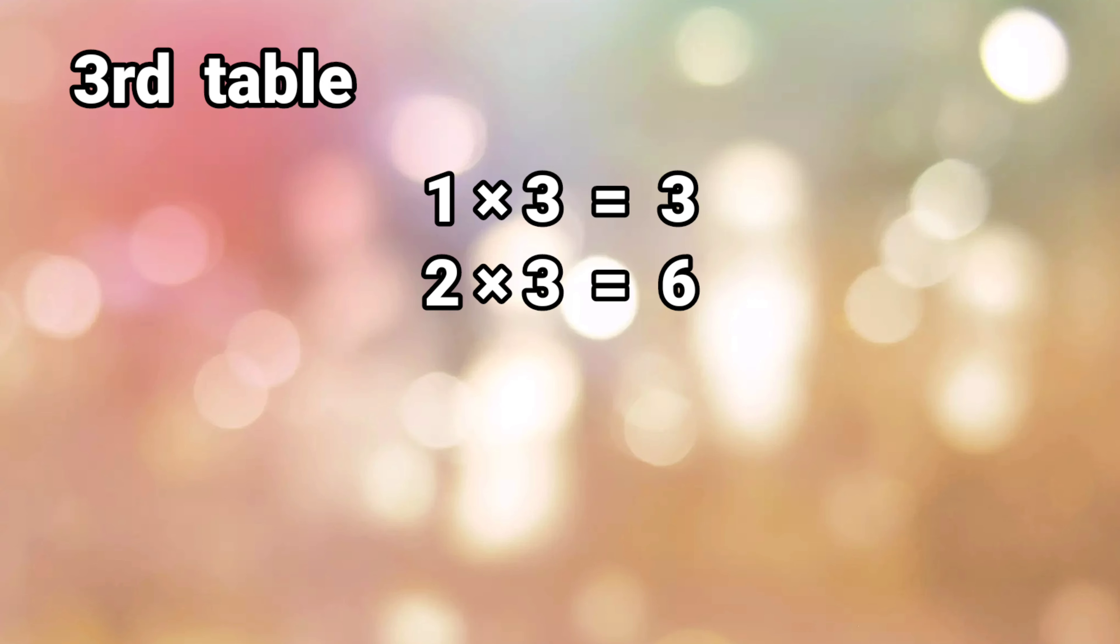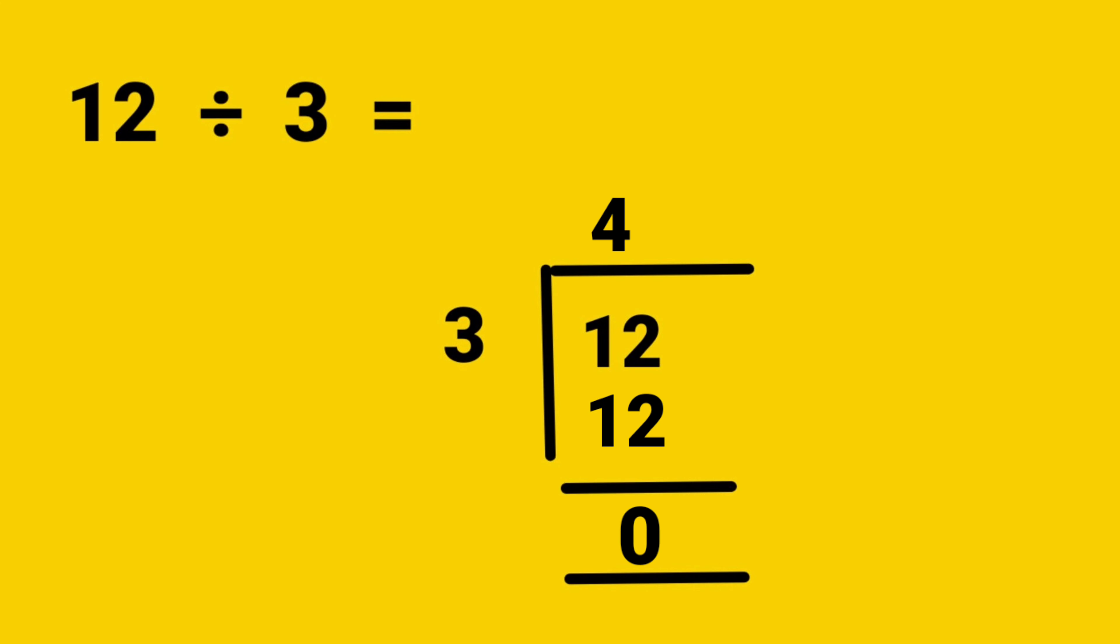1 threes are 3, 2 threes are 6, 3 threes are 9, 4 threes are 12. So, the answer is 12 divided by 3 is equal to 4. So, remainder is 0, quotient is 4.